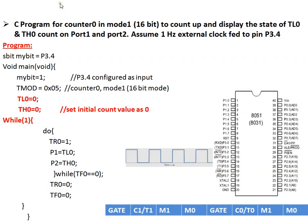In this example, Counter 0 operates in Mode 1 for a counting application. The TL0 and TH0 count values are displayed on Port 1 and Port 2. Pin P3.4 is configured as an input since external events are being counted. The TMOD value to load is 0x05. TL0 and TH0 are initialized to 0, the timer is started, and TL0/TH0 values are output to P1 and P2. In the while loop, TF0 is continuously monitored, and when it overflows and TF0 is set to 1, the loop exits and the process repeats continuously.